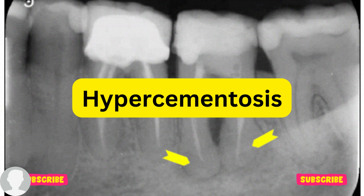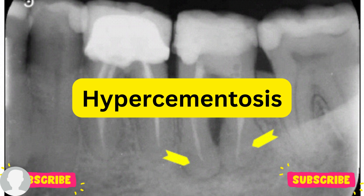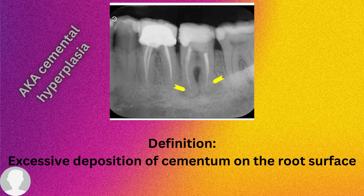Hello everyone, welcome back to my channel. This is Dr. Zina speaking. Today we are going to talk about what is hypercementosis, or cemental hyperplasia. As the name suggests, 'hyper' means too much, and 'cementosis' refers to cementum — so hypercementosis means excessive deposition of cementum on the root surface.